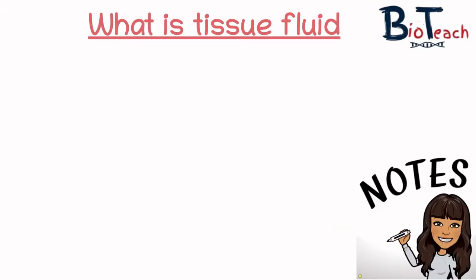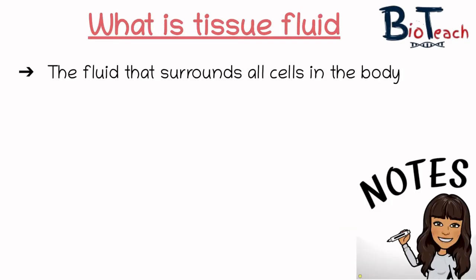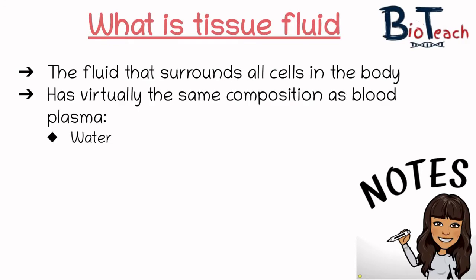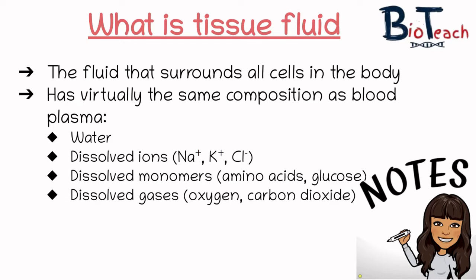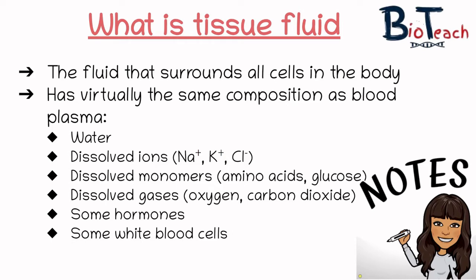Tissue fluid is the fluid that surrounds all cells in the body, and it has virtually the same composition as blood plasma. So it contains water, ions, monomers such as amino acids and glucose, dissolved gases such as oxygen and carbon dioxide, as well as some white blood cells.